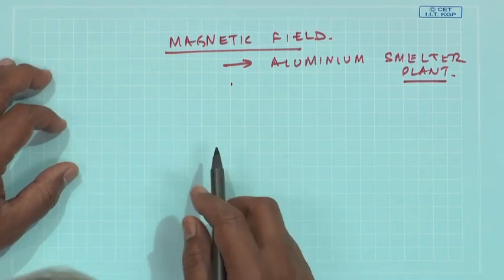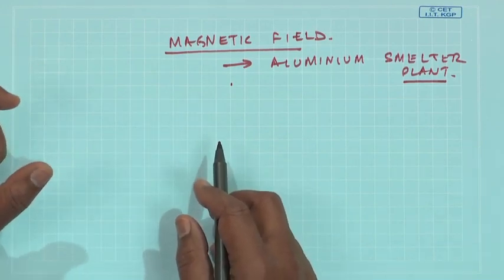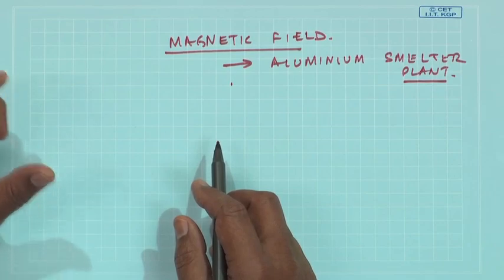We will talk about how the range in which the transducer is not designed for, if you use it what kind of errors will come in the subsequent class. But this is very important to keep in mind that wrong measurements is no measurements. Do not measure wrongly if you want to interpret anything out of the machine.